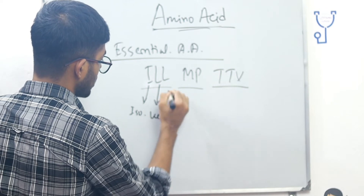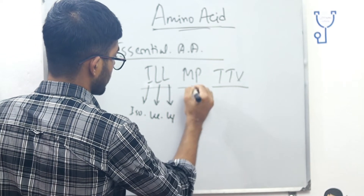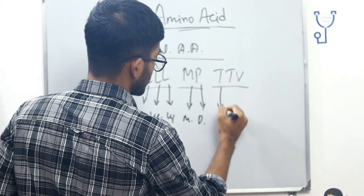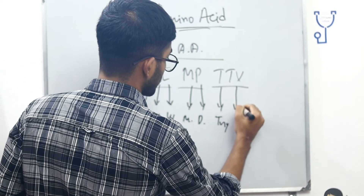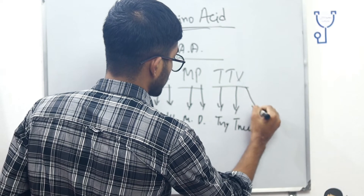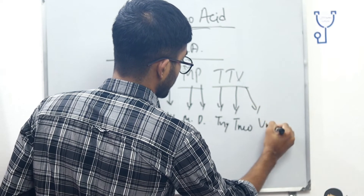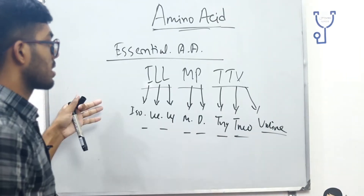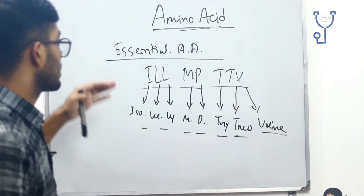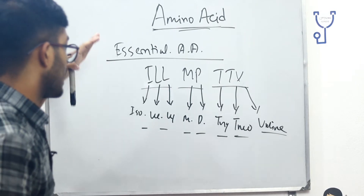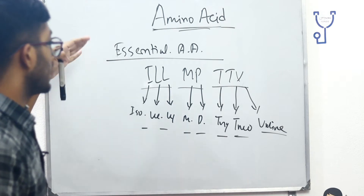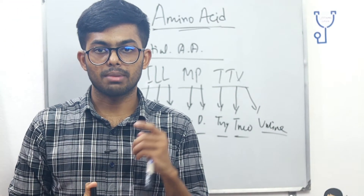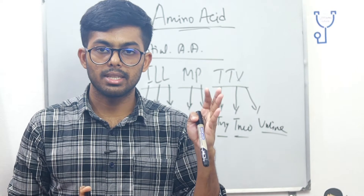Lysine, Methionine, Phenylalanine, Tryptophan, Threonine, Valine — these are the main names of the essential amino acids our body requires.